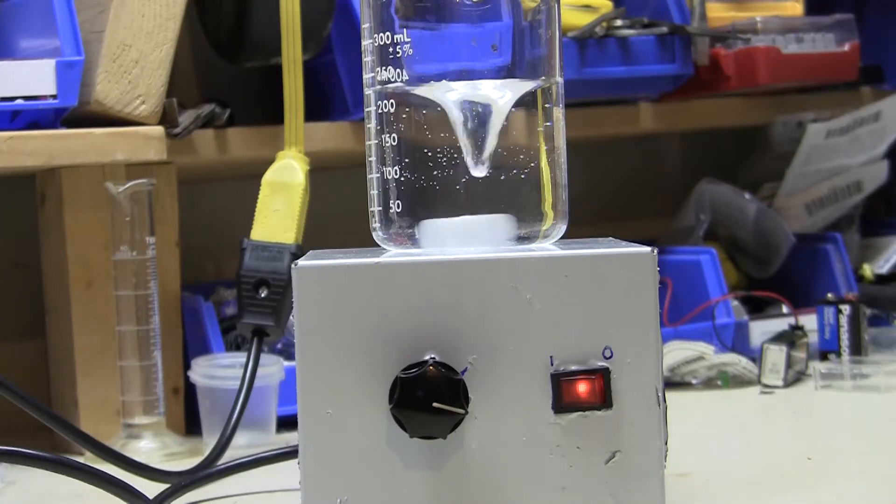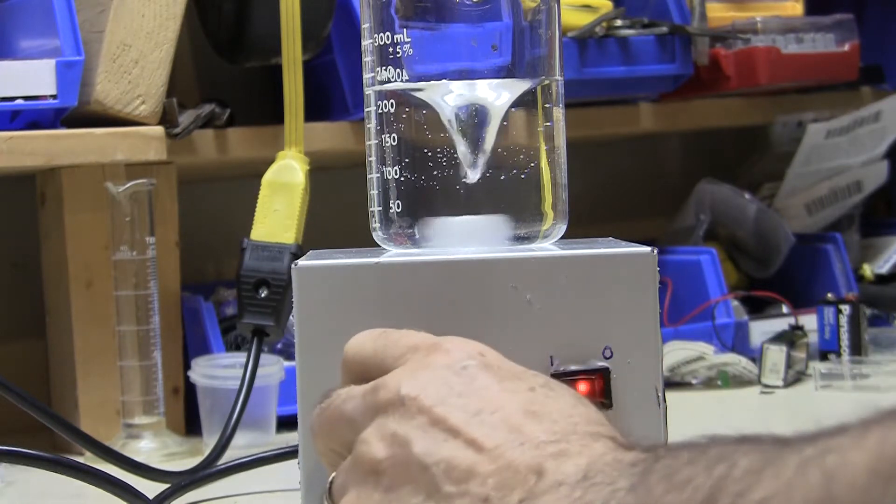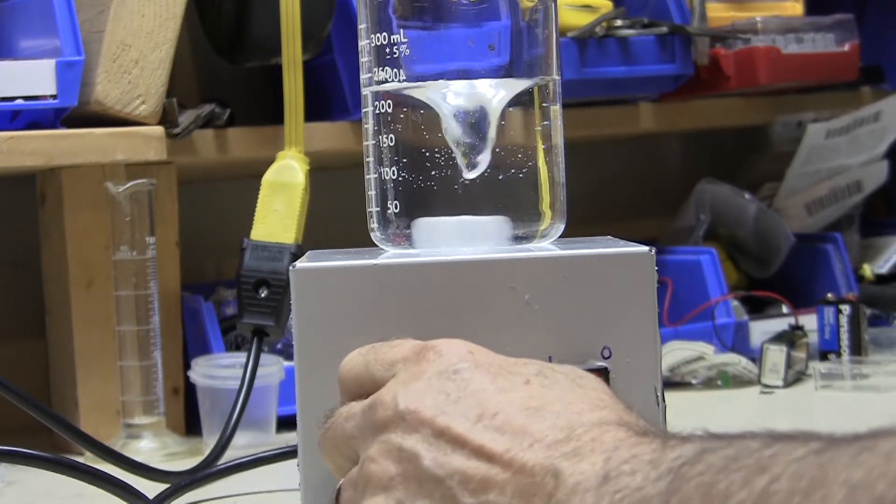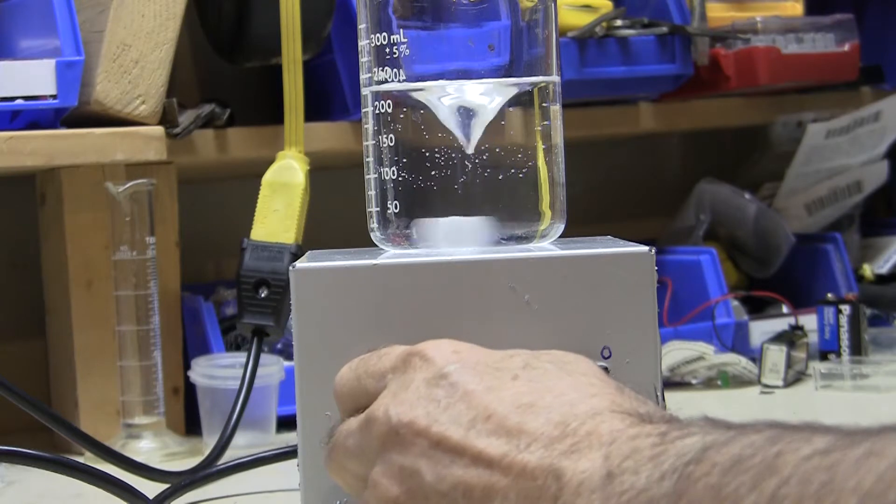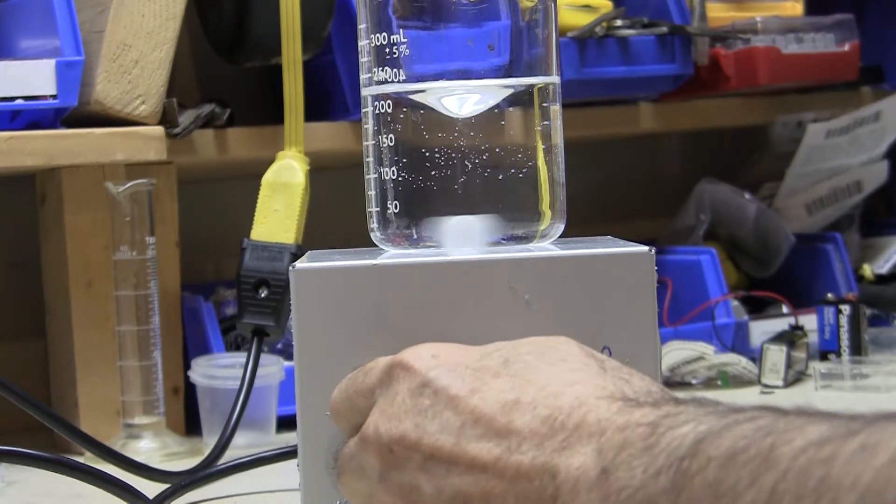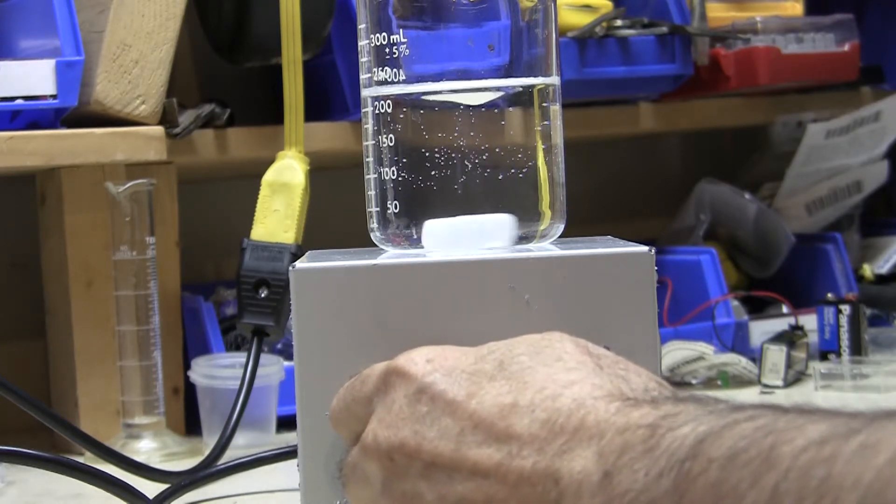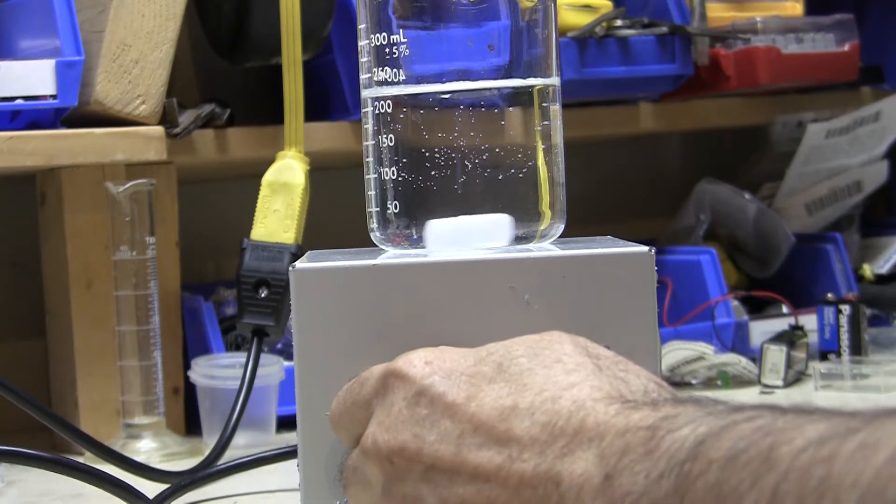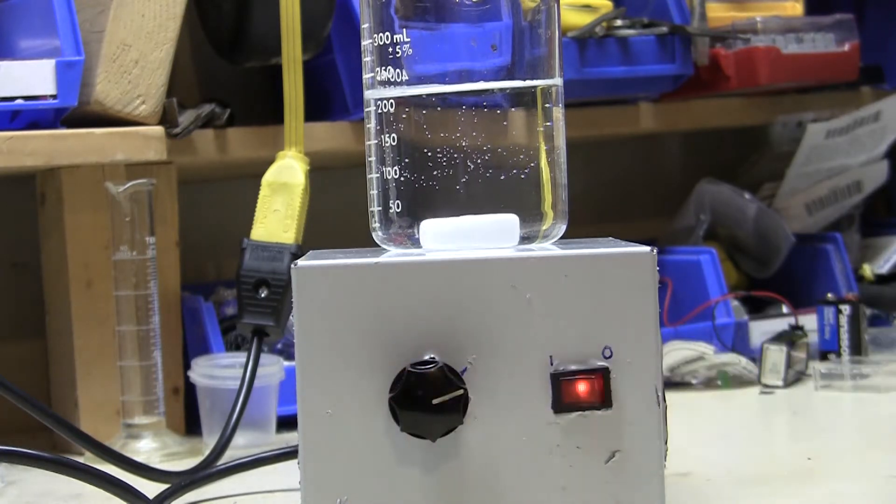This magnetic stirrer can make the stir bar go quickly or slowly. And the beauty of this particular stirrer is that you can control the speed, and this is what I will be going into in this video.